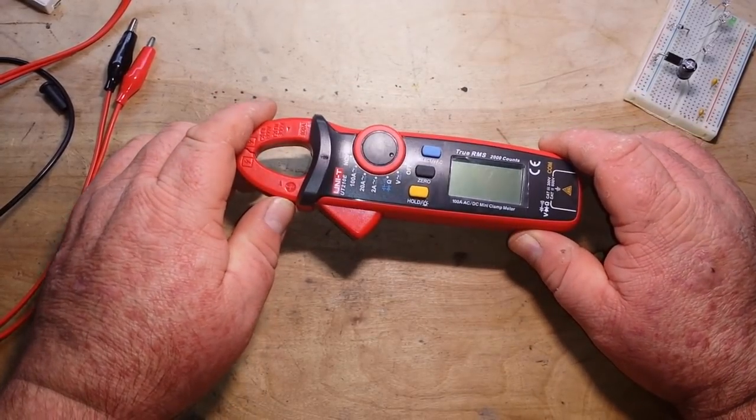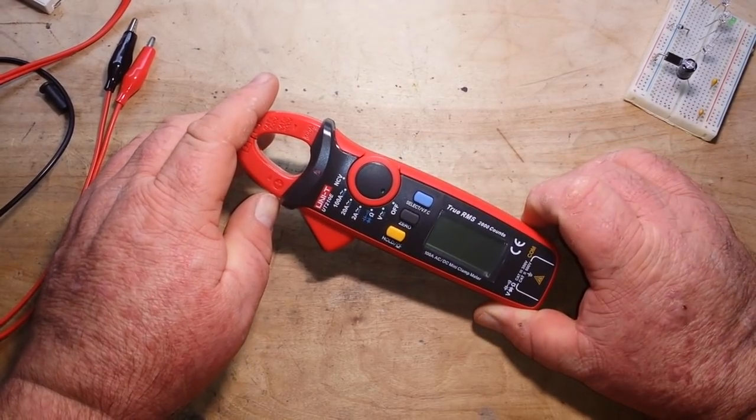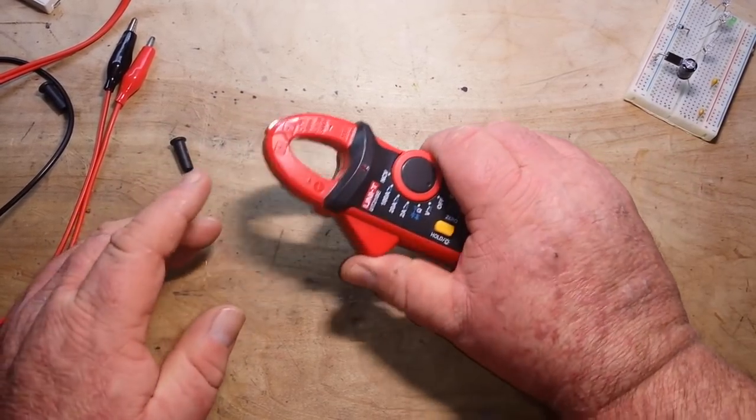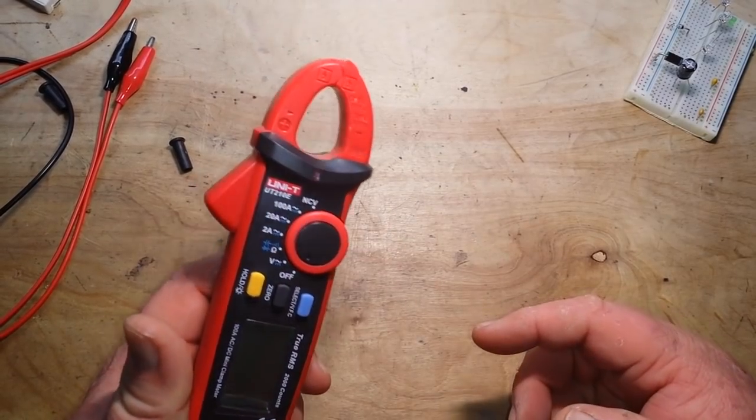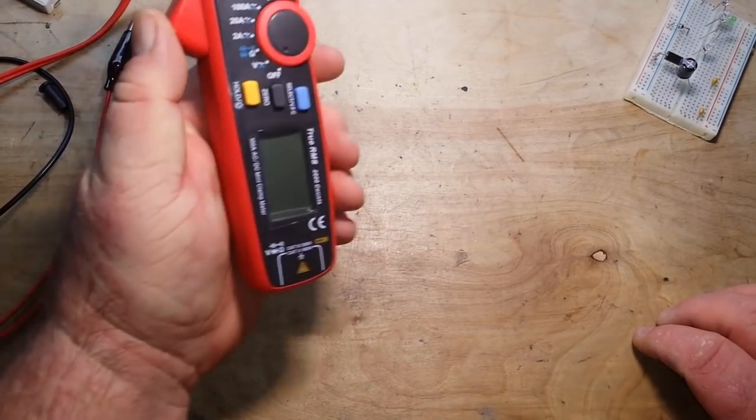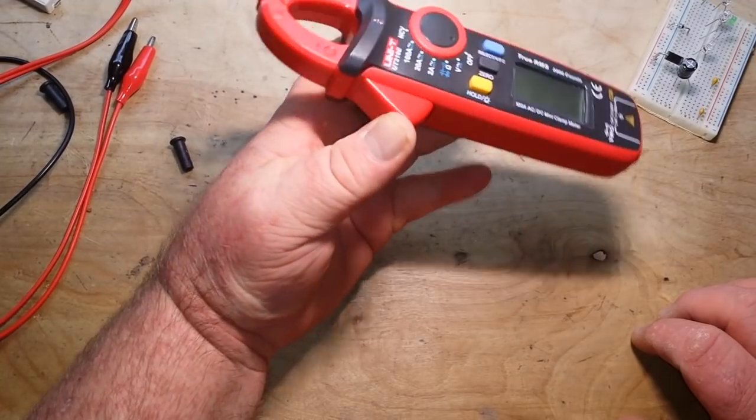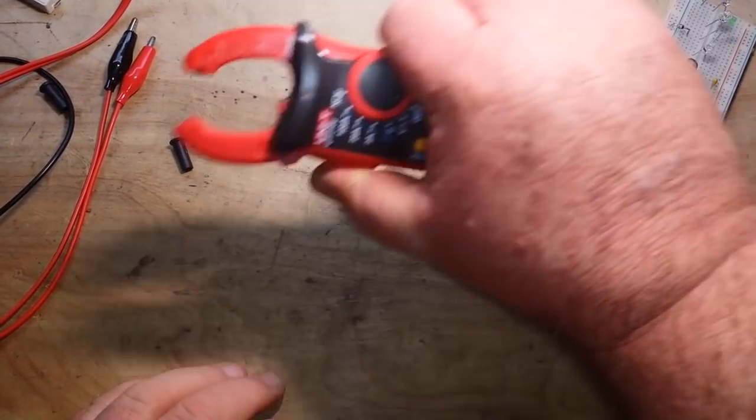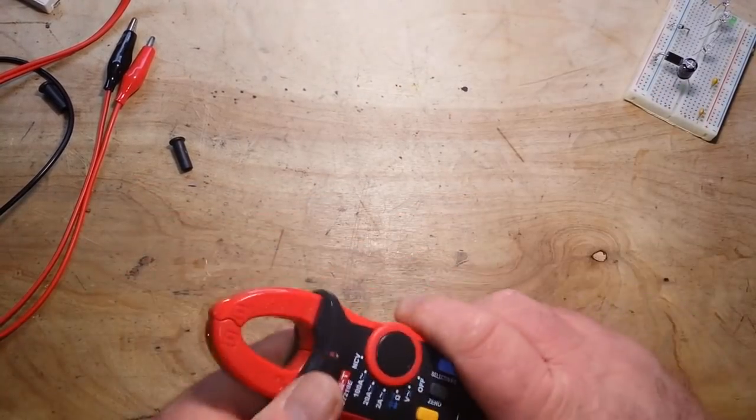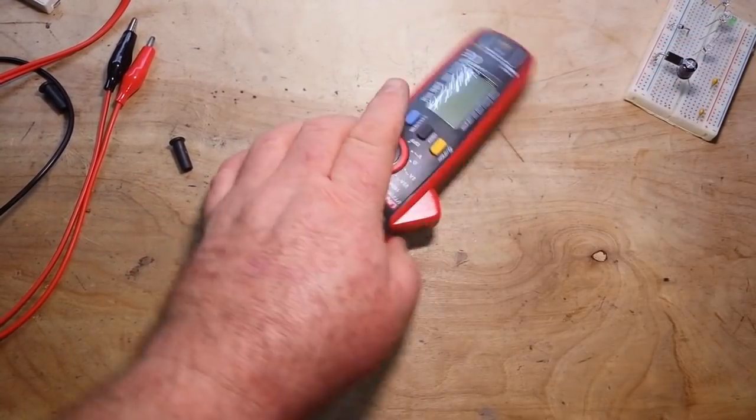But yeah, anyway, that is the UNI-T UT210E clamp meter, very nice. Again, my only complaint is I wish this trigger was on the other side. So, you know, if you are putting this on a wire and you are trying to read it, it is kind of hard. If you are a right-hander you are going to do it like this and then of course you have covered everything up. But I like it.